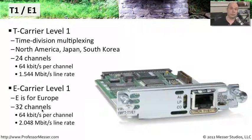You do have 64 kilobits per channel. But because you have 32 channels in use, you have a total of 2.048 megabits per second line rate.